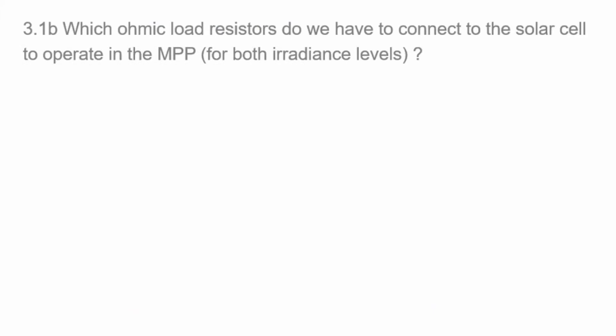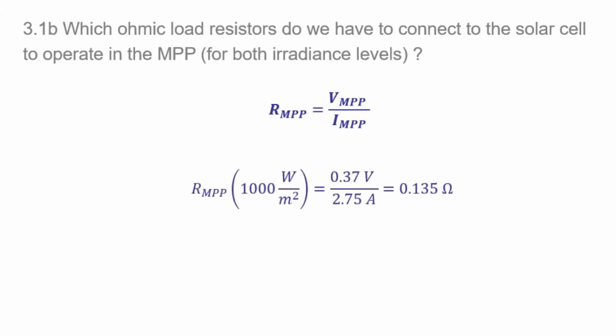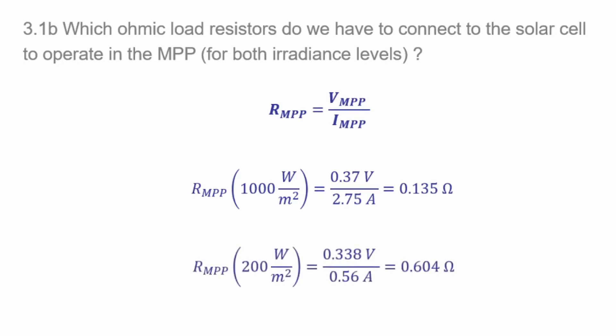Let's go to the next part: which ohmic load resistors have to be connected to the solar cell to operate them at the MPP? We want to extract the maximum power possible. By Ohm's law, voltage divided by current gives the ohmic value. For 1000 W/m²: V_mpp = 0.37 V and I_mpp = 2.75 A, giving an optimal resistor of 0.135 Ω. For 200 W/m²: the voltage sinks a little, but the main effect is the current is about five times less, giving an optimal resistor of 0.604 Ω.